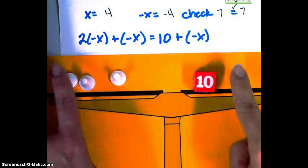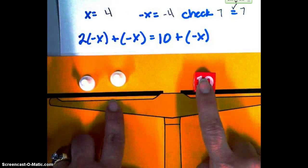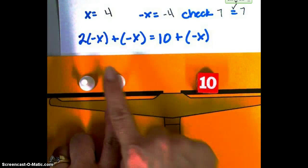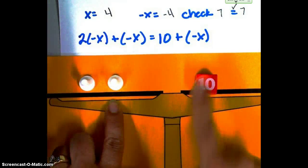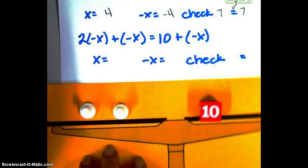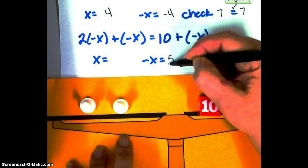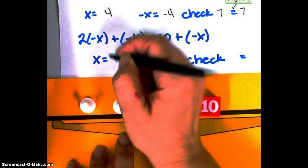And we can do our legal move, taking one off of each side. And I've got 2 negative x equal 10. So each one of these must be worth 5. So in this case, my negative x equals 5. So x must equal a negative 5.